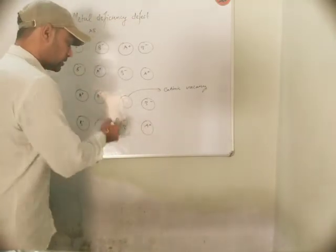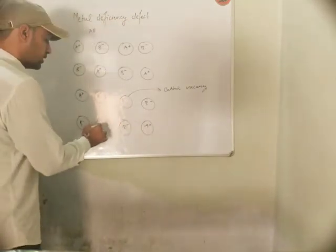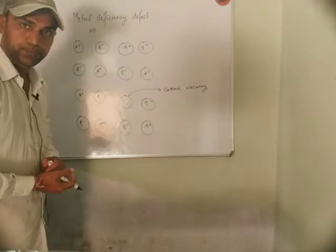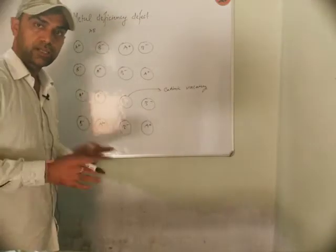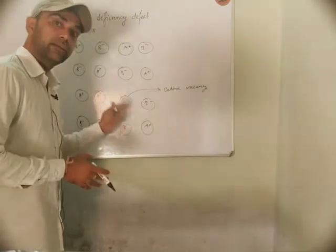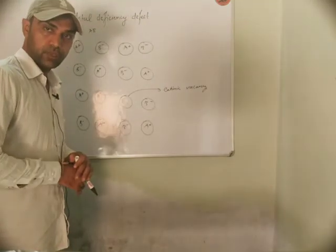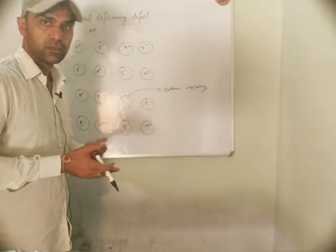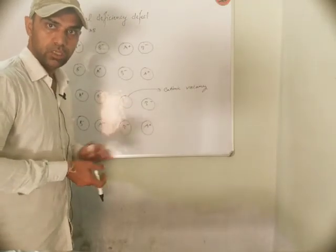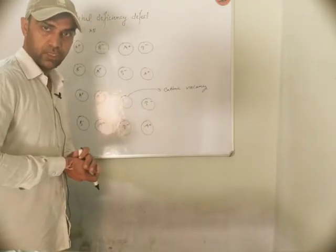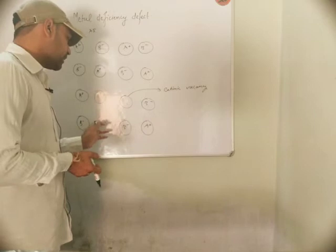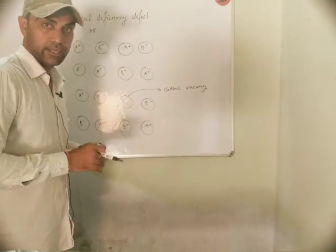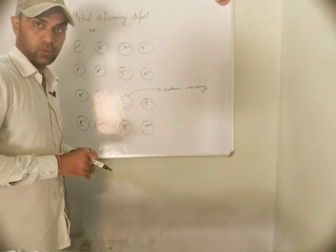Suppose what comes to this lattice point is A2 positive — a higher charge cation. Now electrical neutrality is maintained. This is actually a type of vacancy defect because a vacancy is created, and on the other side there is an extra cation — in the sense a higher charge cation.